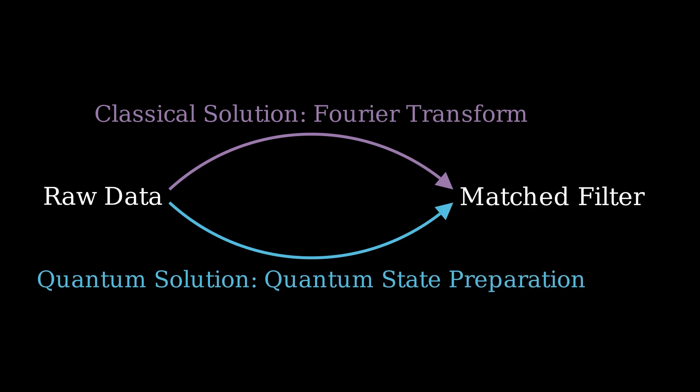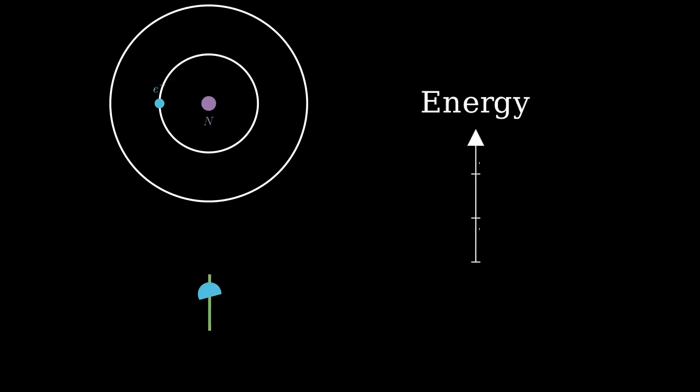Before I get into quantum state preparation, I'm going to give a quick speedrun of the quantum theory that you'll need to know to understand it. First, a quantum computer is composed of qubits. These are individual quantum systems that we can directly control. They have two states, which correspond to physical quantities, like spin, that we can interact with.